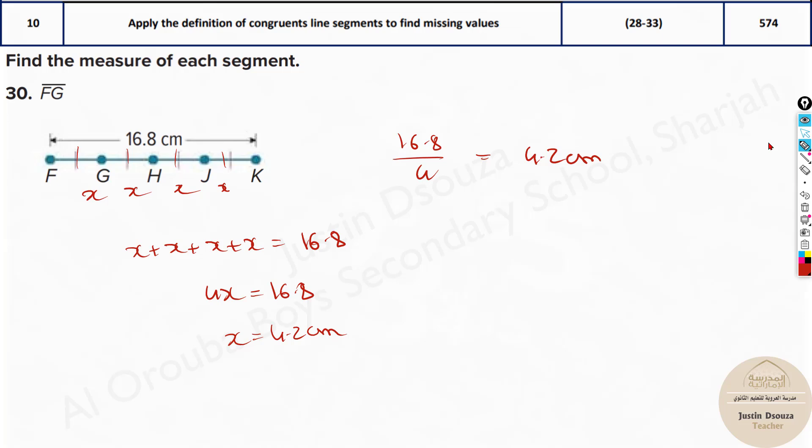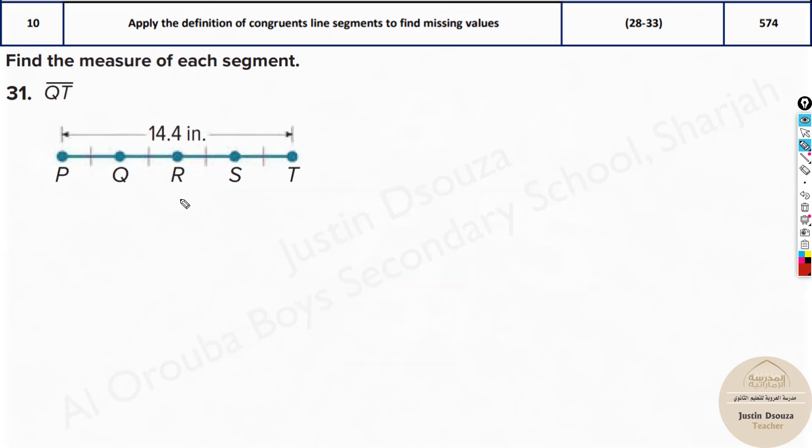I hope this is clear. Another similar problem but here they have told to find the length of Q to T. That means 1, 2, 3 segments only.